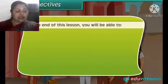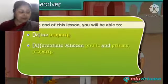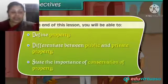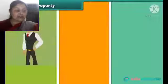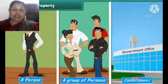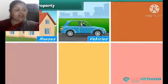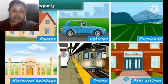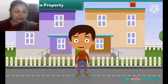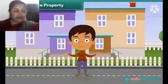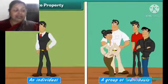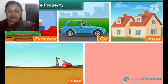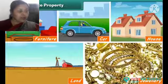A responsible citizen has various social and moral responsibilities. The responsibilities of a good citizen are: he or she must respect national symbols such as the national flag and the national anthem, pay taxes regularly, vote responsibly during elections, preserve public property, follow the rules and regulations of the country, and conserve the environment.